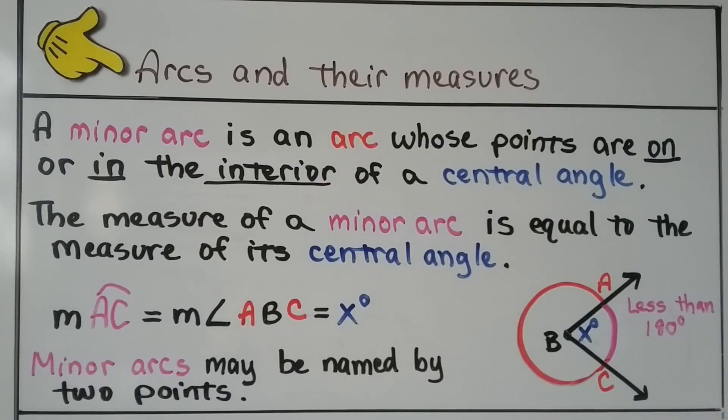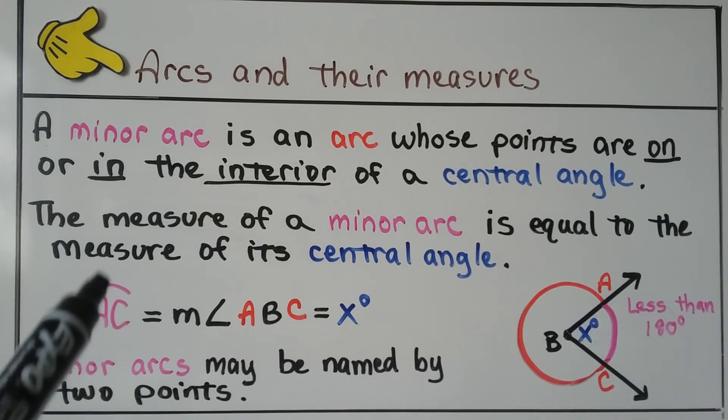So for your notes, for arcs and their measures, a minor arc is an arc whose points are on or in the interior of a central angle. And the measure of a minor arc is equal to the measure of its central angle. So the measure of arc AC, right here, is equal to the measure of angle ABC, which is equal to x degrees. And minor arcs may be named by two points, like this. And see we have the arc on top of it so that we know it's arc AC.